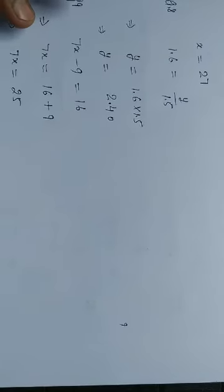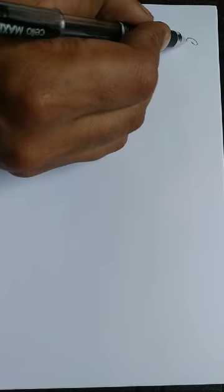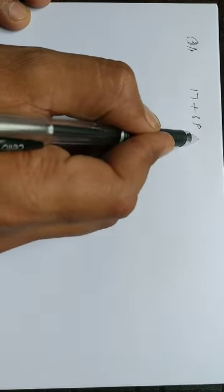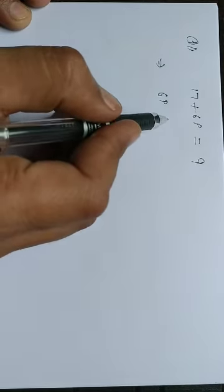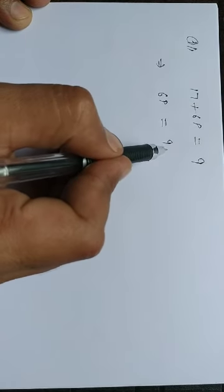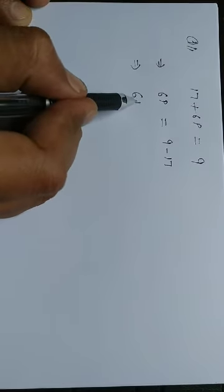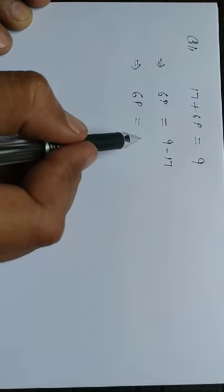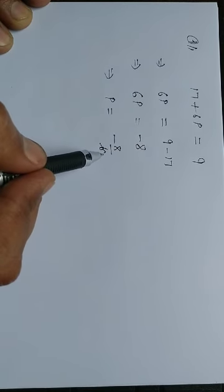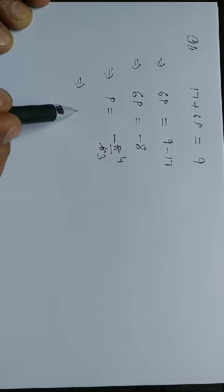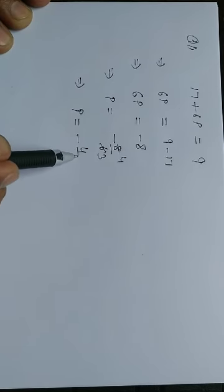Question number 11: 17 plus 6p is equal to 9. Transposing 17 to the right hand side, it becomes minus 17. So 6p is equal to 9 minus 17, which is minus 8. Therefore p is equal to minus 8 upon 6. Simplifying, 2 threes are 6 and 2 fours are 8, so p is equal to minus 4 upon 3.